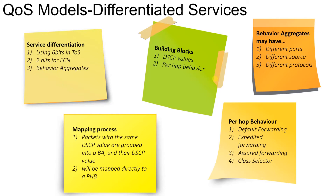The second building block is per-hop behavior. Per-hop behavior is nothing but whenever a packet is traversing through a router or a switch, what action has to be taken on those packets, what policies have to be applied, and what SLA has to be followed — these are all called per-hop behavior.